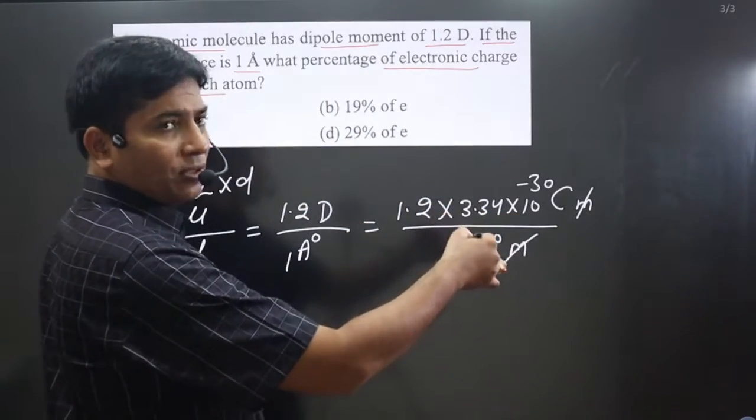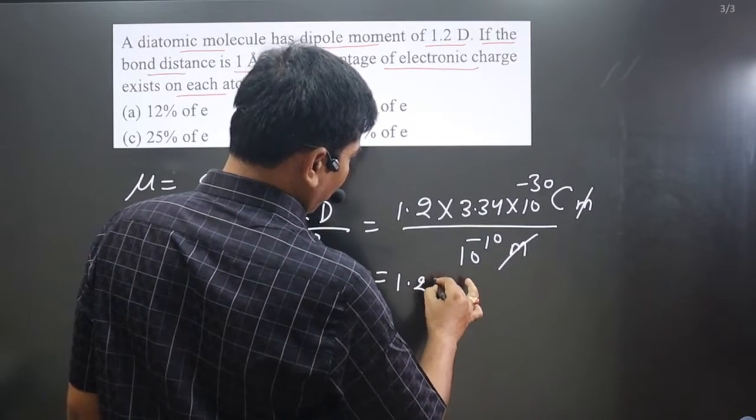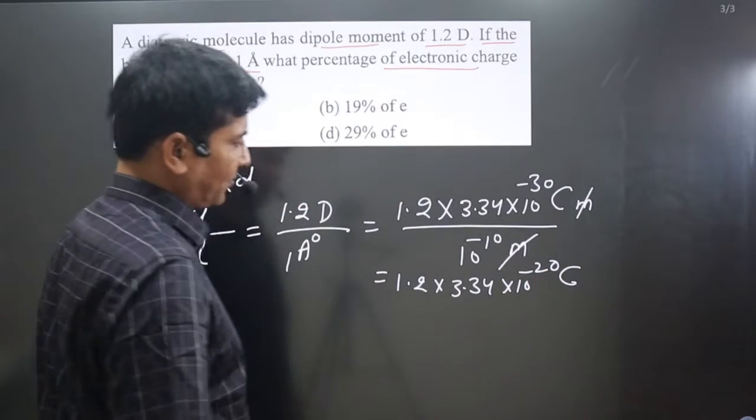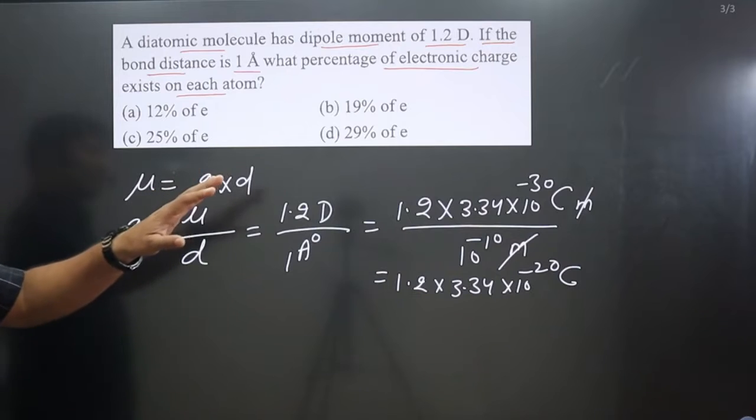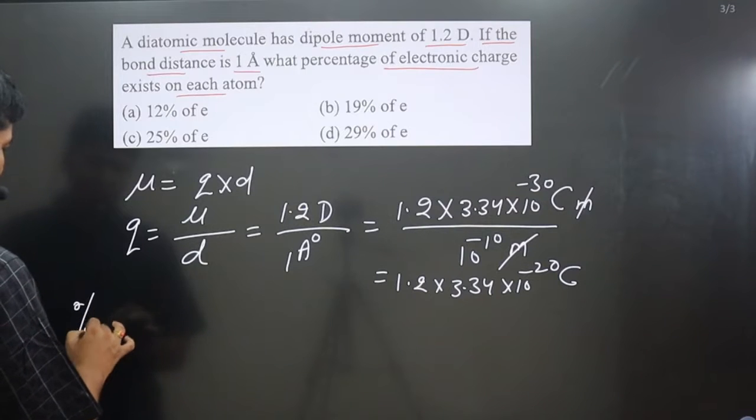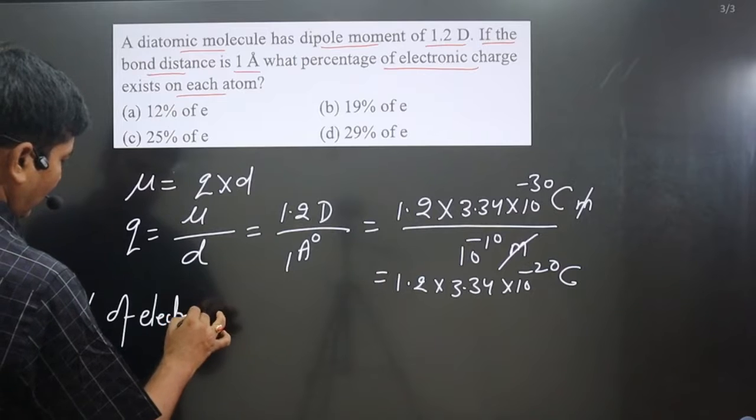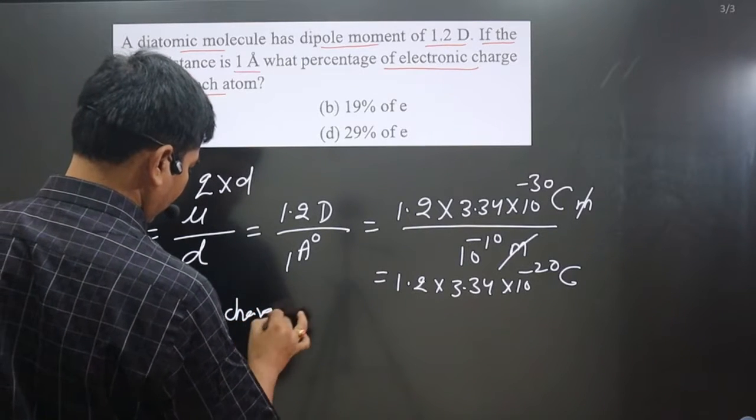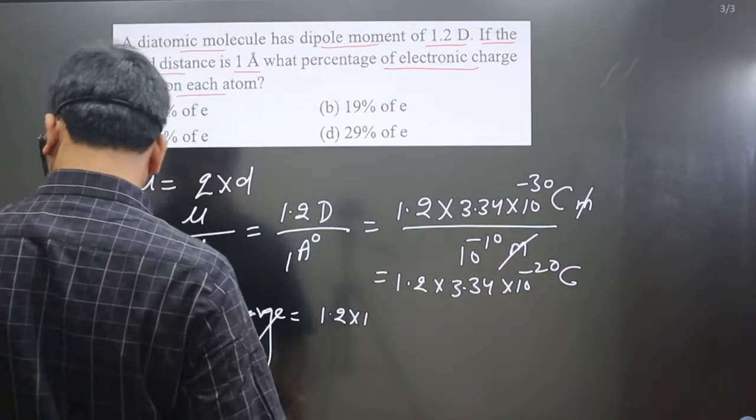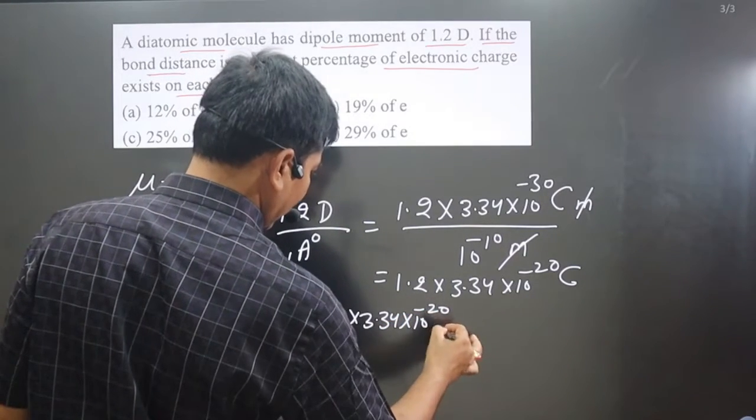10 to power minus 10 will go up so it will become plus 10. Minus 30 plus 10 is equal to minus 20. Then we get 1.2 multiplied by 3.34 multiplied by 10 to power minus 20 and it is coulomb is there.